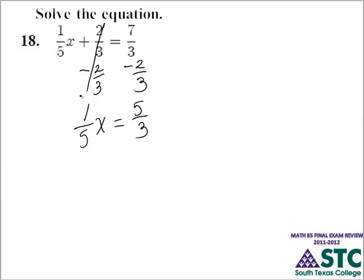For 5 and 3, the LCD is 15 since both are prime numbers. We multiply both sides by 15. On the left, 15 divided by 5 equals 3, so we have 3x. We then distribute 15 times 5 on the right,